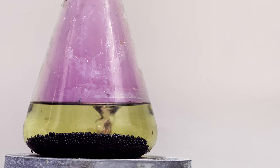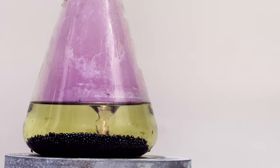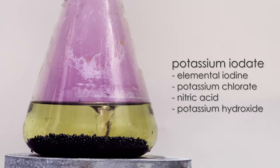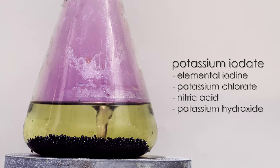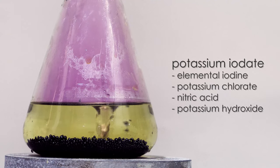In terms of chemicals, there are only a few chemicals needed. For making potassium iodate, we have elemental iodine, potassium chlorate, nitric acid, and potassium hydroxide.